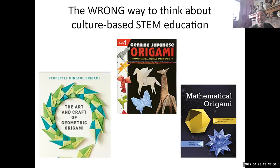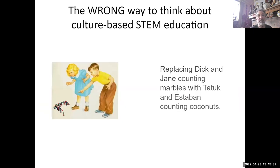You see this in textbooks too — folks saying, 'You want to teach African American kids? Let's bring in some origami because that's culture-based mathematics.' You can see the problem: it's not paying attention to whose culture you're talking about. It's just saying, 'If it's multicultural, we've solved the problem.' In some cases you're just swapping out old word problems with brown skin and different names — basically the same arrangement.